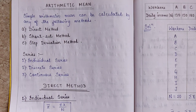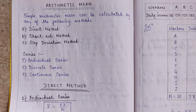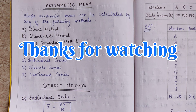So when we have questions in individual series, discrete series, or continuous series and need to find the mean using the direct method, these are the formulas and steps to follow — it is a very simple method. In the next video, I will show how to solve using the shortcut method for all three series types. I hope this video was helpful — thank you!